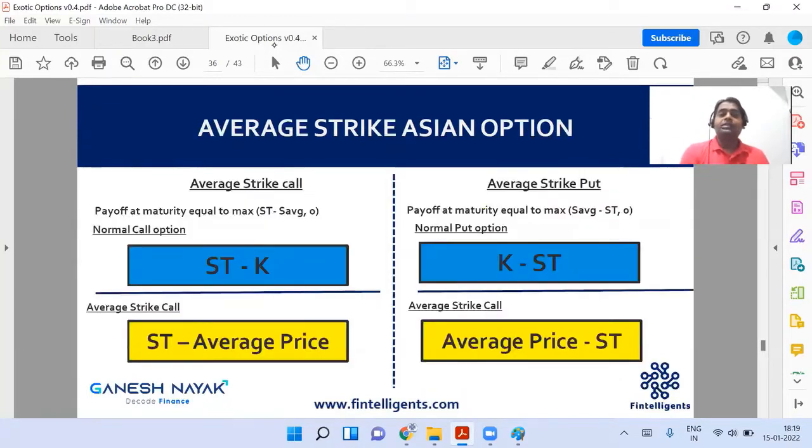Over here, let us go to the first section. What is that? Average strike. Average strike call. See, please remember the word average strike means in the place of K, I will be using average price. Rest everything is simple. Right, basic structure you have to remember: ST minus K for call. So in place of K, I will be using average price because the name itself is average strike.